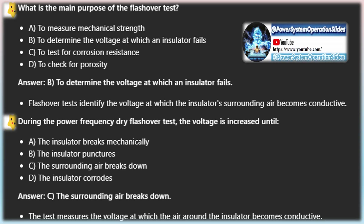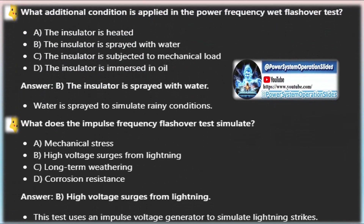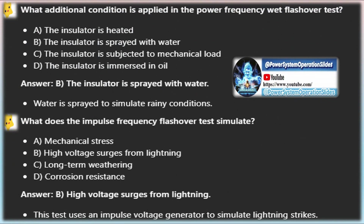Routine tests of insulators — high voltage test: this test is usually conducted on pin insulators. The insulator is inverted and placed in water up to the neck, with the spindle hole also filled with water. A high voltage is applied for 5 minutes, and the insulator should remain undamaged.